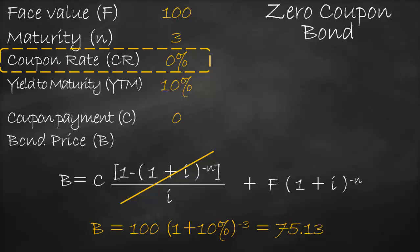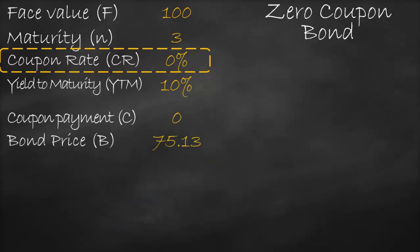This gives us a bond price of 75.13. In this example, the bond price of 75.13 is lower than the face value of 100, therefore we trade this bond at a discount — that's why it's a discount bond.